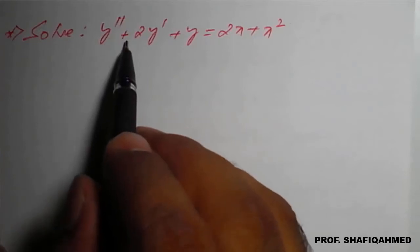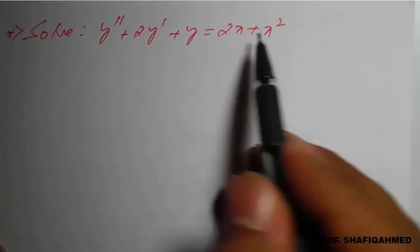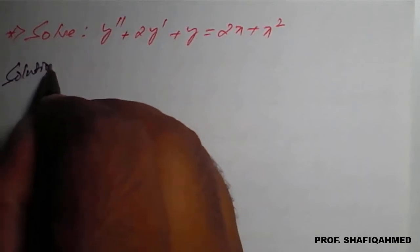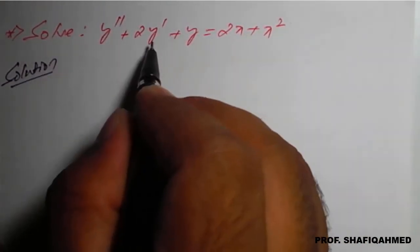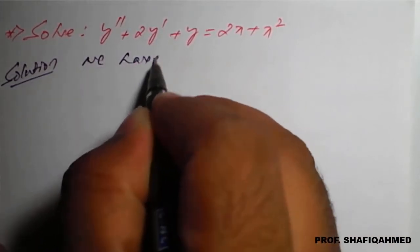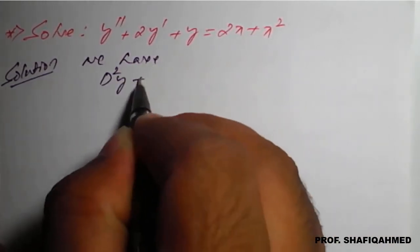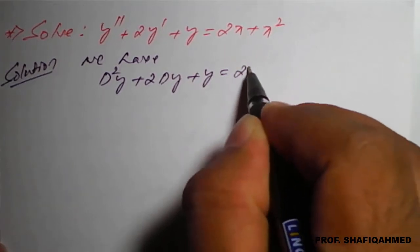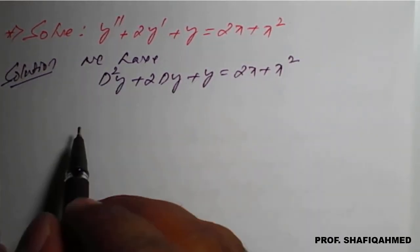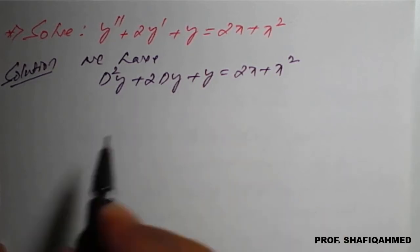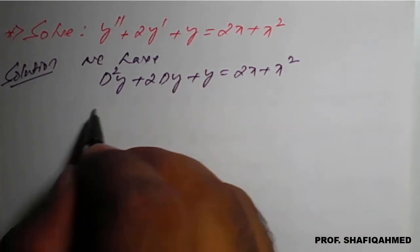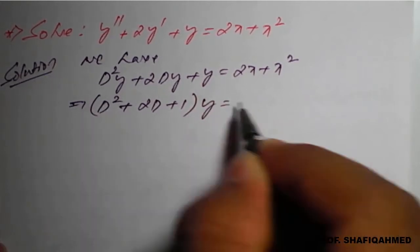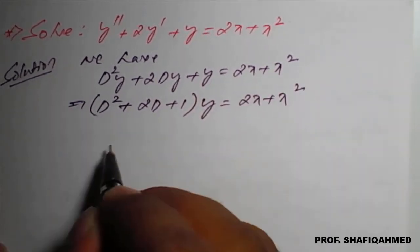The given problem is y double dash plus 2y dash plus y equal to 2x plus x square. The above differential equation can be written as: y double dash is D squared y, plus 2 times y dash written as D of y, plus y equals 2x plus x square. From the left-hand side, we can find the complementary function — take y common — so D squared plus 2D plus 1 of y equals 2x plus x square.